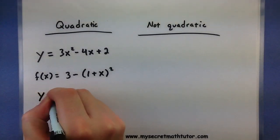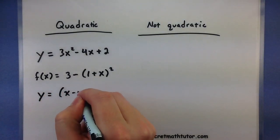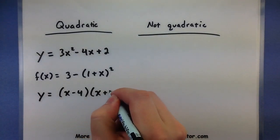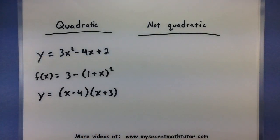Along those same lines, this is also quadratic. And for much of the same reasons, if I was to multiply out these parentheses, I would end up with an x squared.